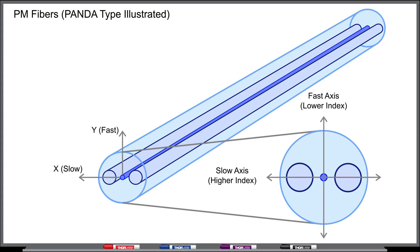Since light travels slower in a high-index material, the axis aligned to the stress rods is called the slow axis, and the orthogonal axis is called the fast axis.